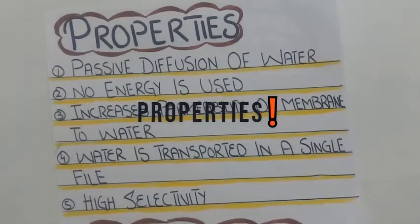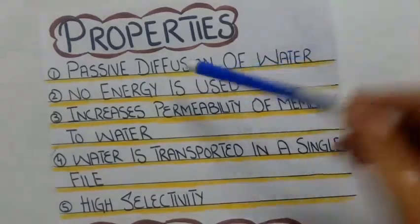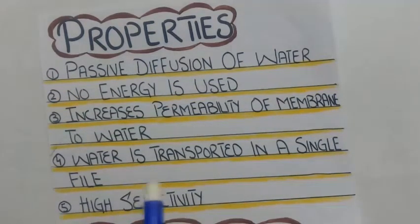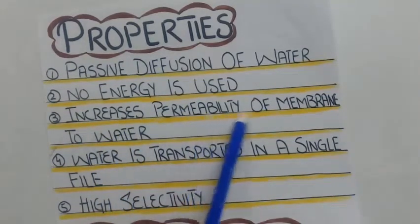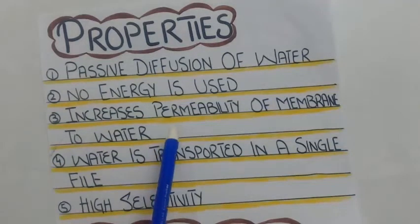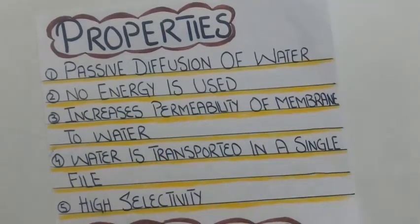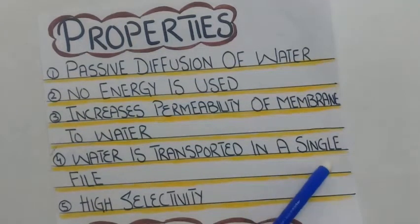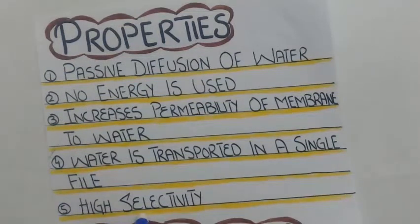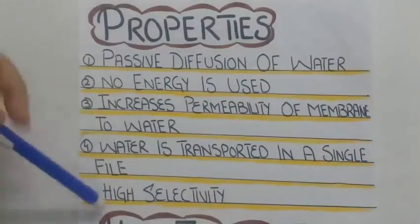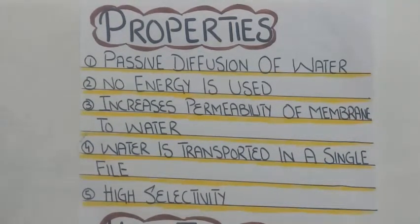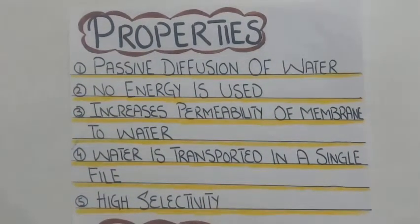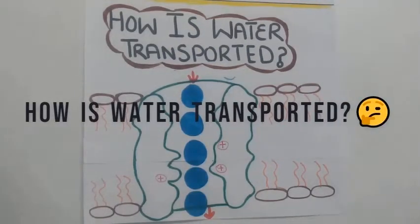Properties of aquaporins: the passage or transportation of water through these pores is through passive diffusion, which means no energy or ATP is utilized. Aquaporins increase the permeability of the membrane to water, allowing rapid transportation of water across the cell membrane. Water is transported in a single file, and aquaporins are highly selective — this property of high selectivity will be discussed in detail later in the video.